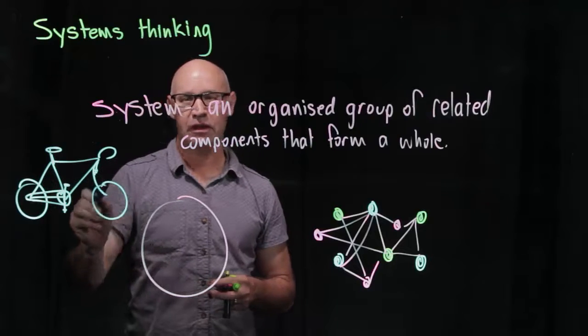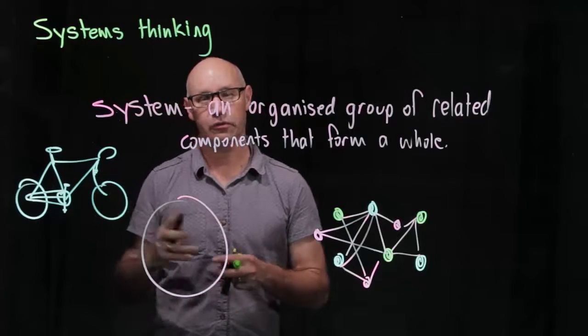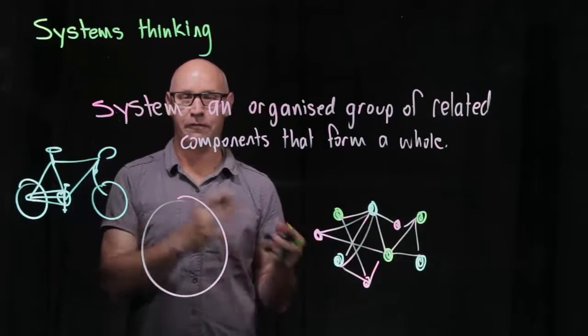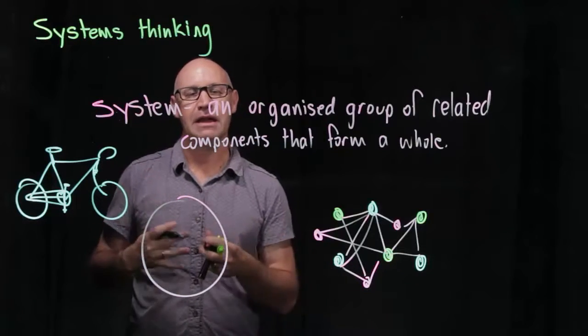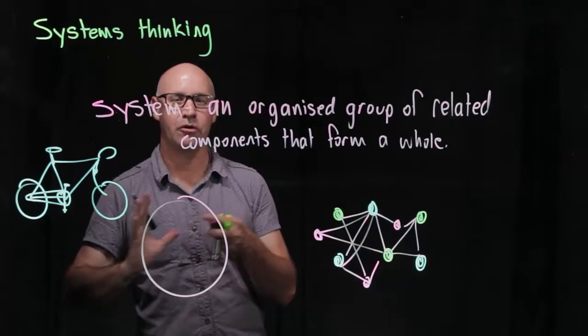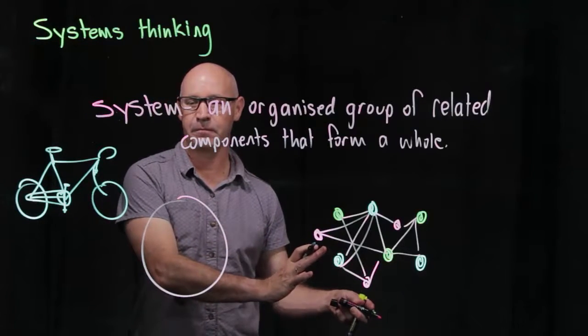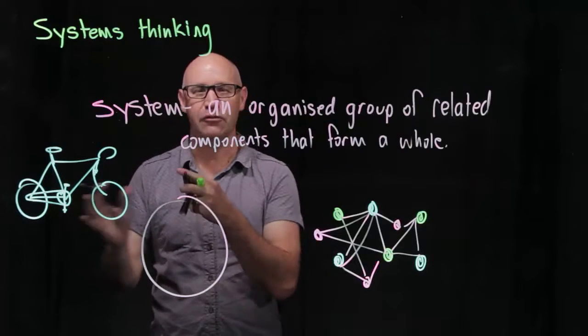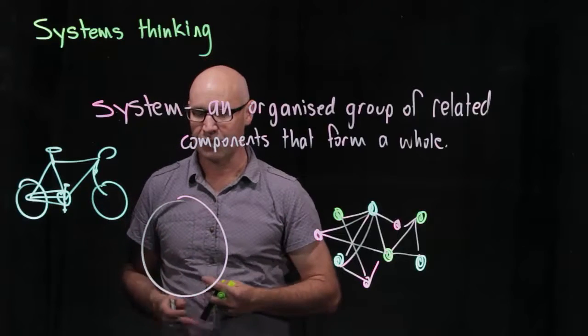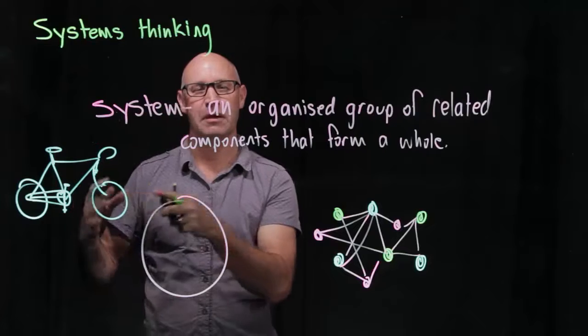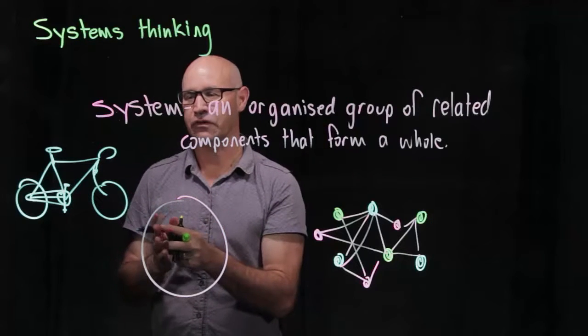For example, those heavier thicker wheels, whilst they're great on a mountain bike for being able to go off road, they actually make it harder for the gear system to work to propel the bike forward. So these systems tend to interrelate to each other. So specialization of one part of the system may have an impact on another part of the system.